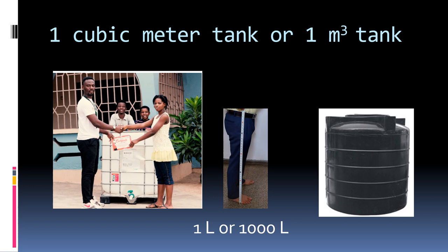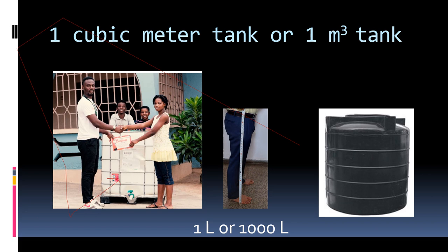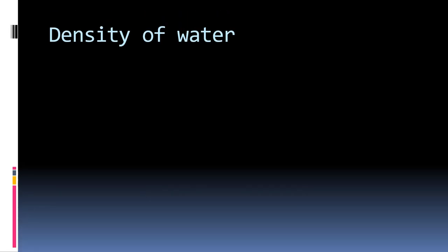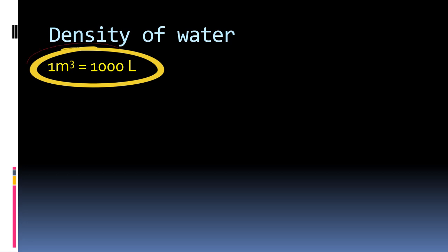Now imagine whether this tank will contain one liter or thousand liters. If your answer is thousand liters, then we are close to solution. Now that we have established that one meter cube tank will contain one thousand liters of water, let's calculate density.